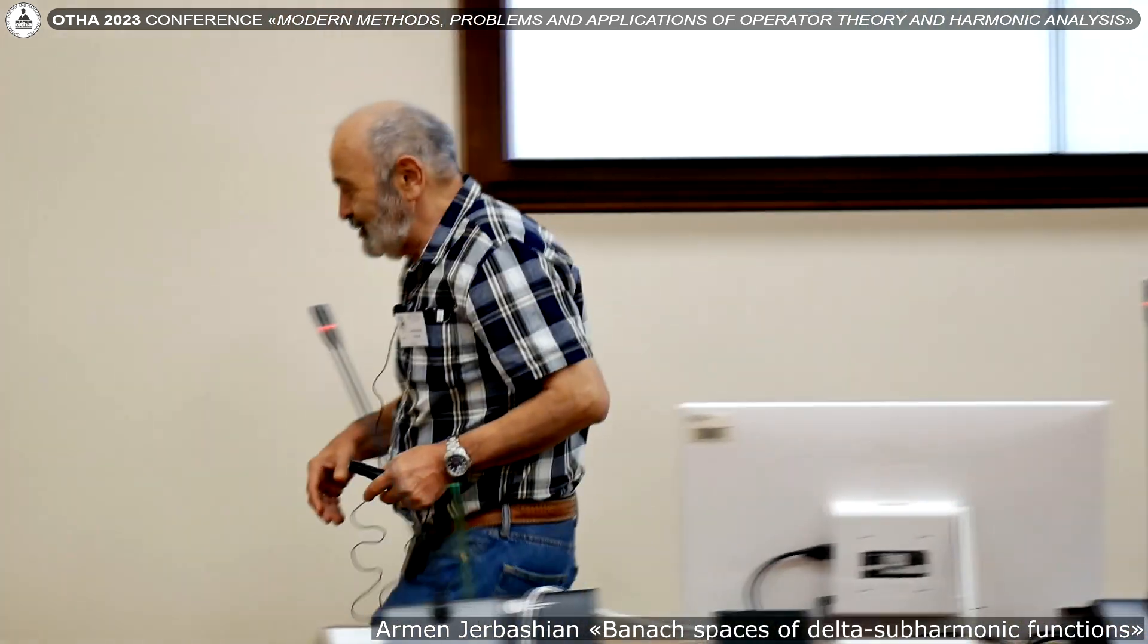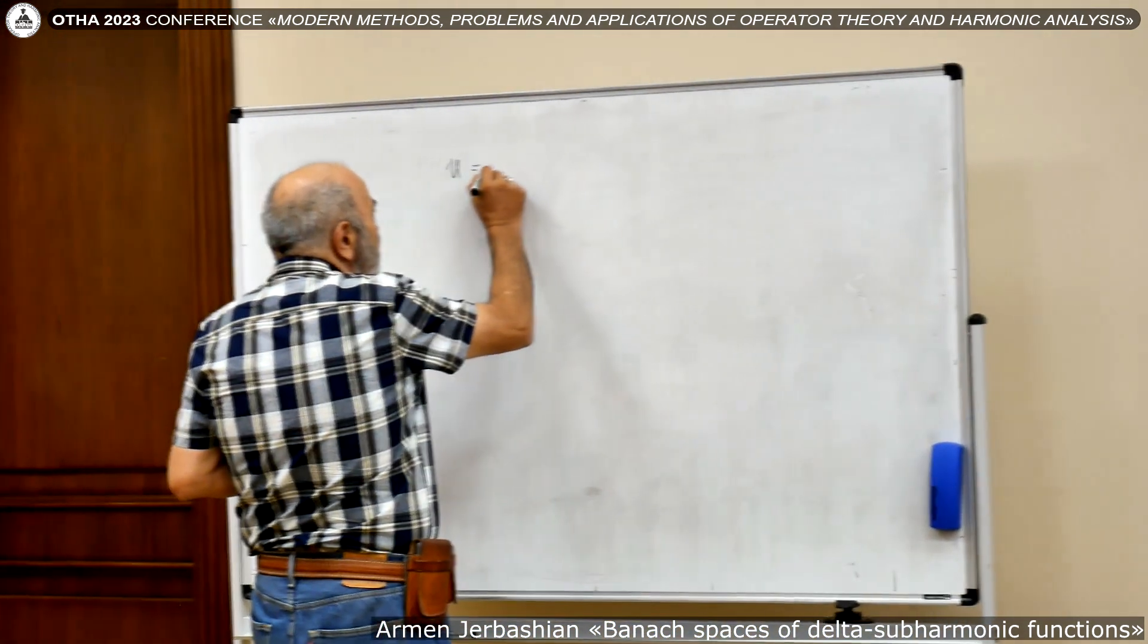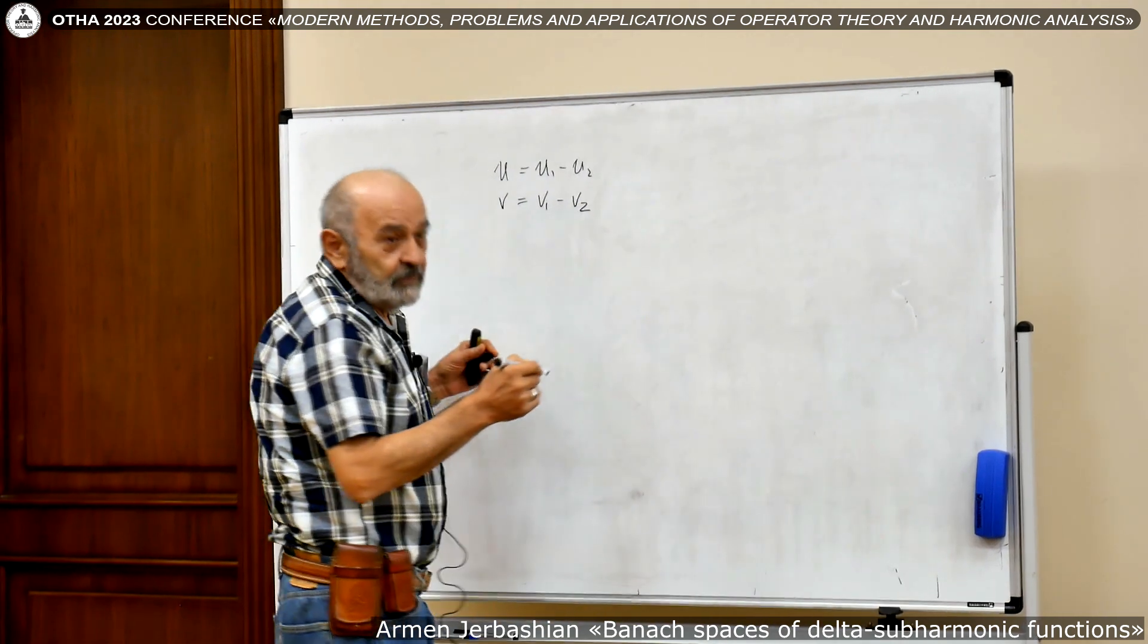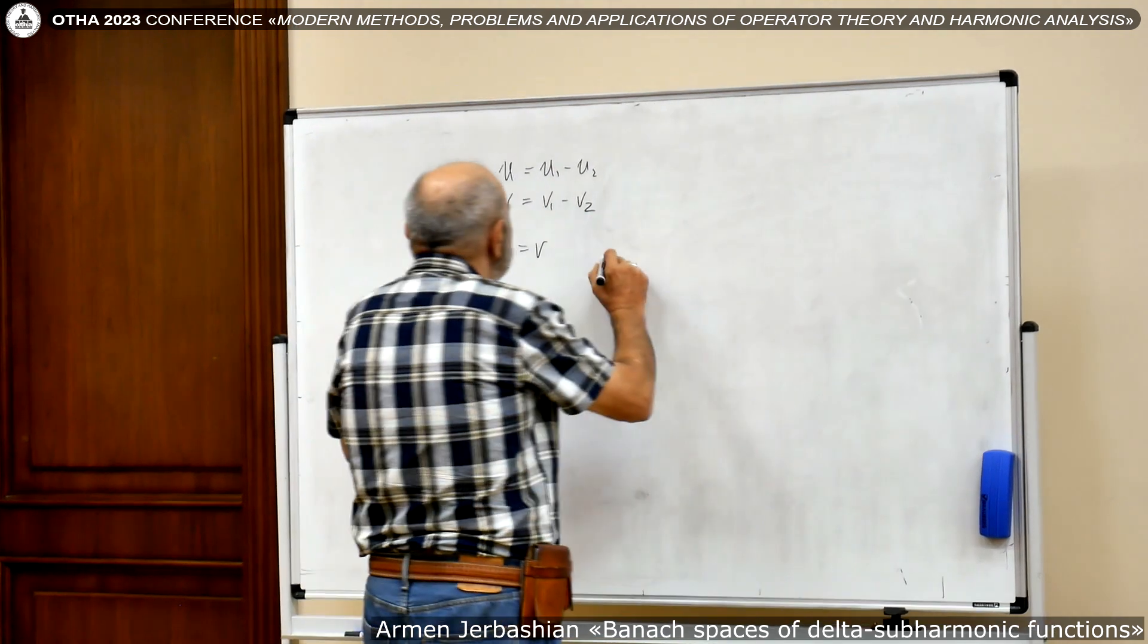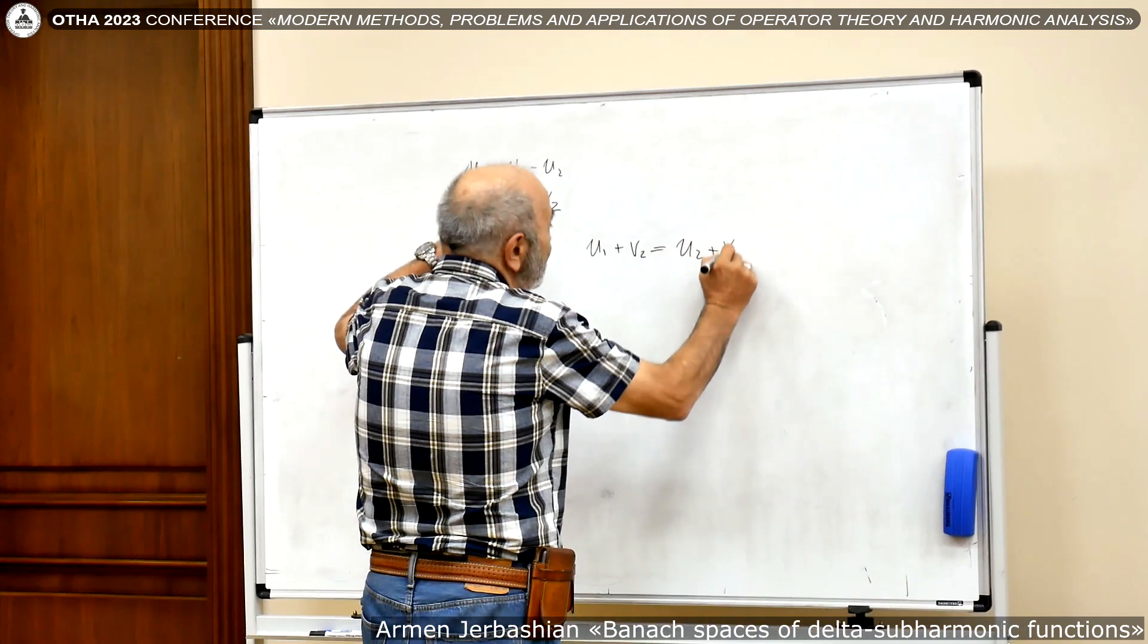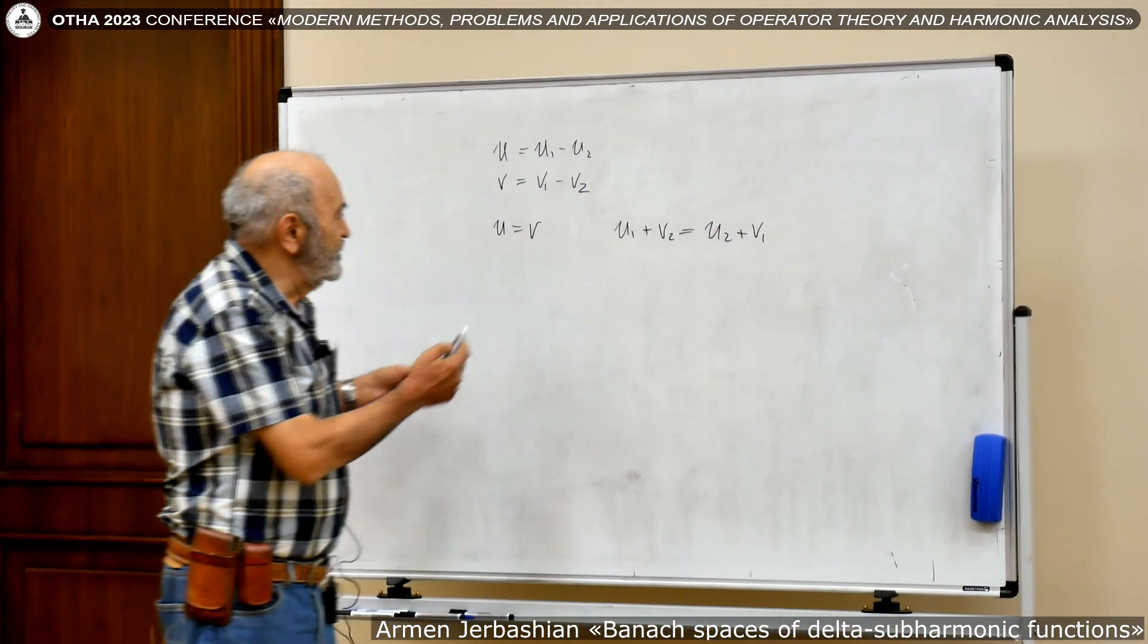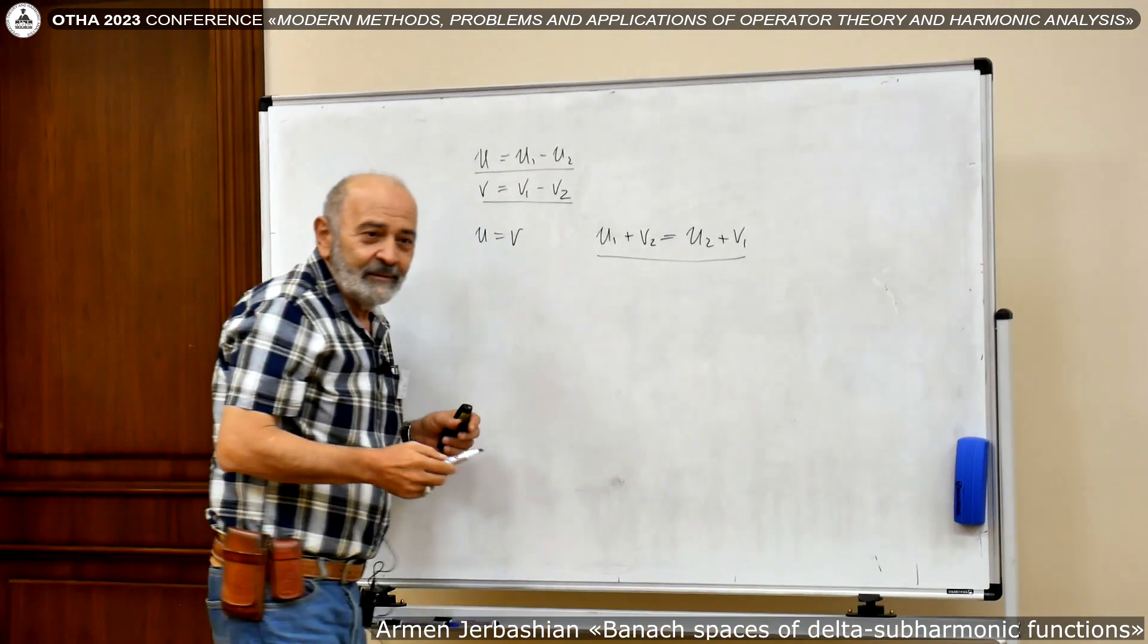But the question is being solved very easily. For instance, if we have delta sub-harmonic u1 minus u2, two sub-harmonic functions, and some other delta sub-harmonic functions v is v1 minus v2, again two sub-harmonic functions, then let us understand that u equals v means u1 plus v2 is u2 plus v1. And then these functions are defined anywhere, and the equality is understandable completely.